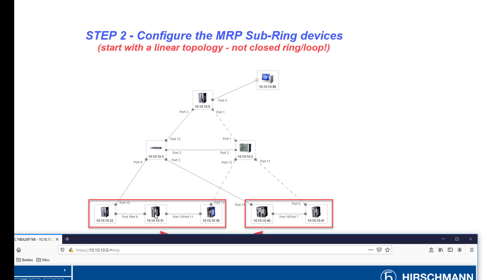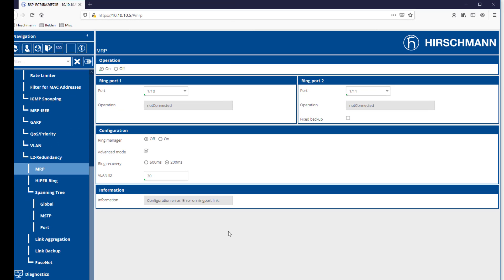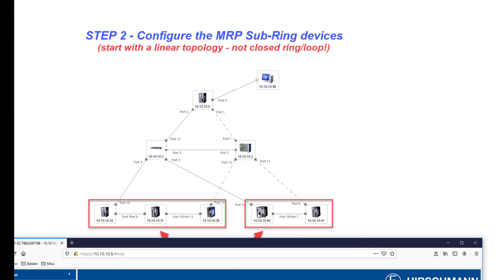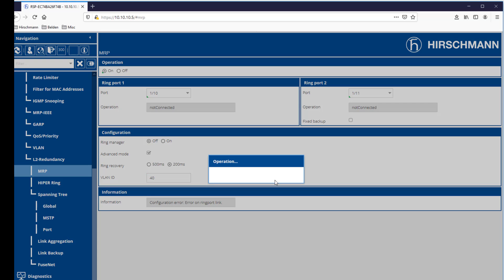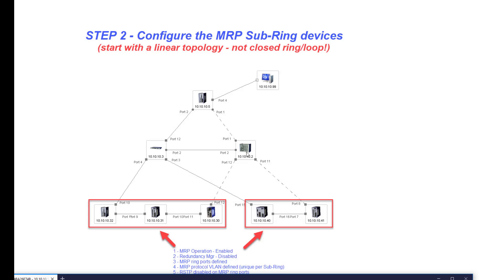This switch, this switch, and this switch would have exactly the same configuration. We would then replicate this for the other two switches, the only exception being that those two switches would be on VLAN ID 40. This ensures that the watchdog packets traversing this subring do not conflict with the watchdog packets of the other subring, as well as the MRP core ring. So the MRP core ring is on VLAN 0, this subring is VLAN 30, and the other is VLAN 40 for the MRP protocol.